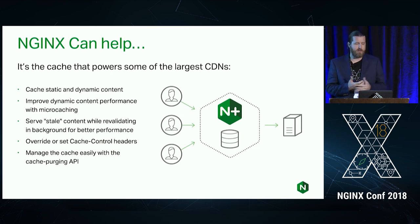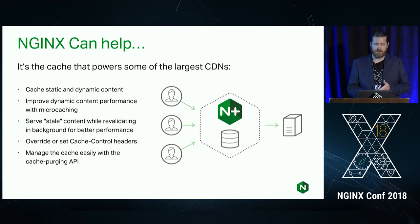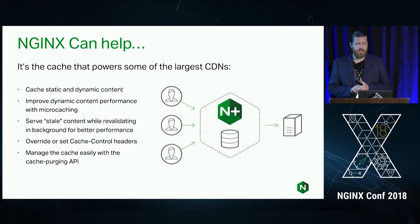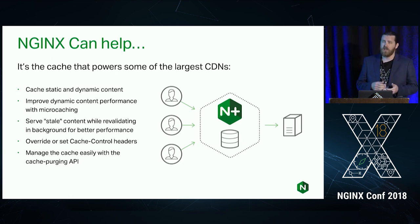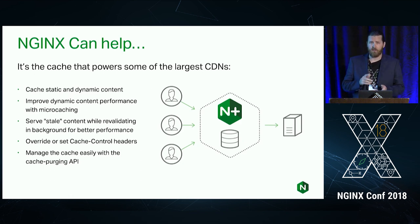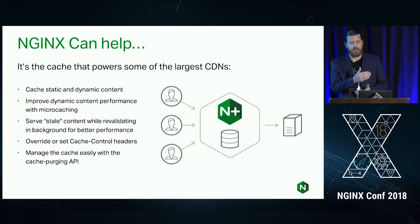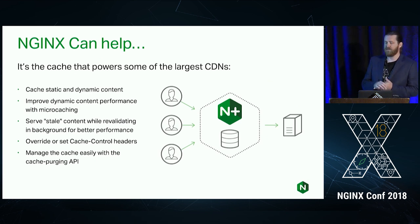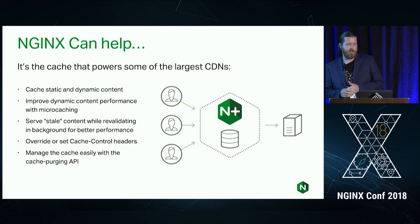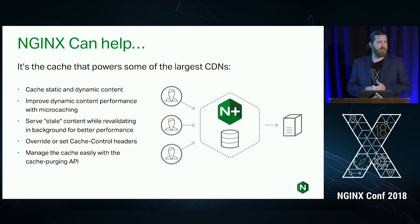NGINX can help — that's really the main point. We can help cache static and dynamic content. We can help improve performance of your applications by doing micro-caching or by caching those responses. We can also serve stale content while revalidating to help performance. You can also use NGINX to control the cache and override what your application developers are doing — maybe they're trying to control private resources that you feel could be cached. And NGINX Plus has a cache management API so you can quickly query it to invalidate the cache on the fly.